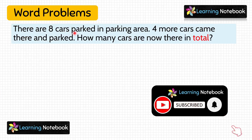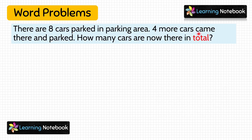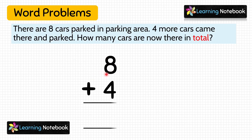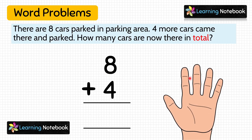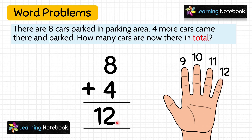Let's solve a few more word problems. There are 8 cars parked in a parking area. 4 more cars came there and parked. How many cars are now there in total? Here, the word 'total' is given, so we have to do addition. The bigger number is 8, so keep 8 in mind and count 4 fingers: 9, 10, 11, 12. So 8 plus 4 equals 12. There are 12 cars in total.